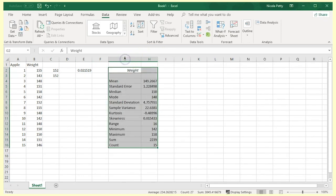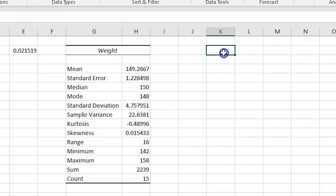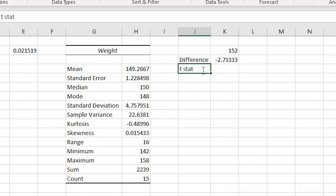We wish to see how far the mean of the sample is from our hypothesized mean in terms of standard errors. So we calculate the sample mean minus the hypothesized mean, and we find that it is negative 2.73333. Next we divide by the standard error of 1.228, and get negative 2.22494.